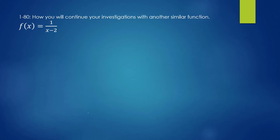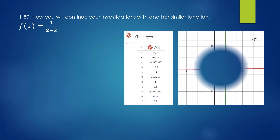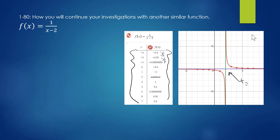Now I'm bringing in the table and graph for f(x) = 1 / (x − 2). I've chosen five values on either side of 2, going from x = −3 to x = 7. The graph looks similar to before. The asymptote is now at x = 2, where the function is undefined. There is still a horizontal asymptote at y = 0.